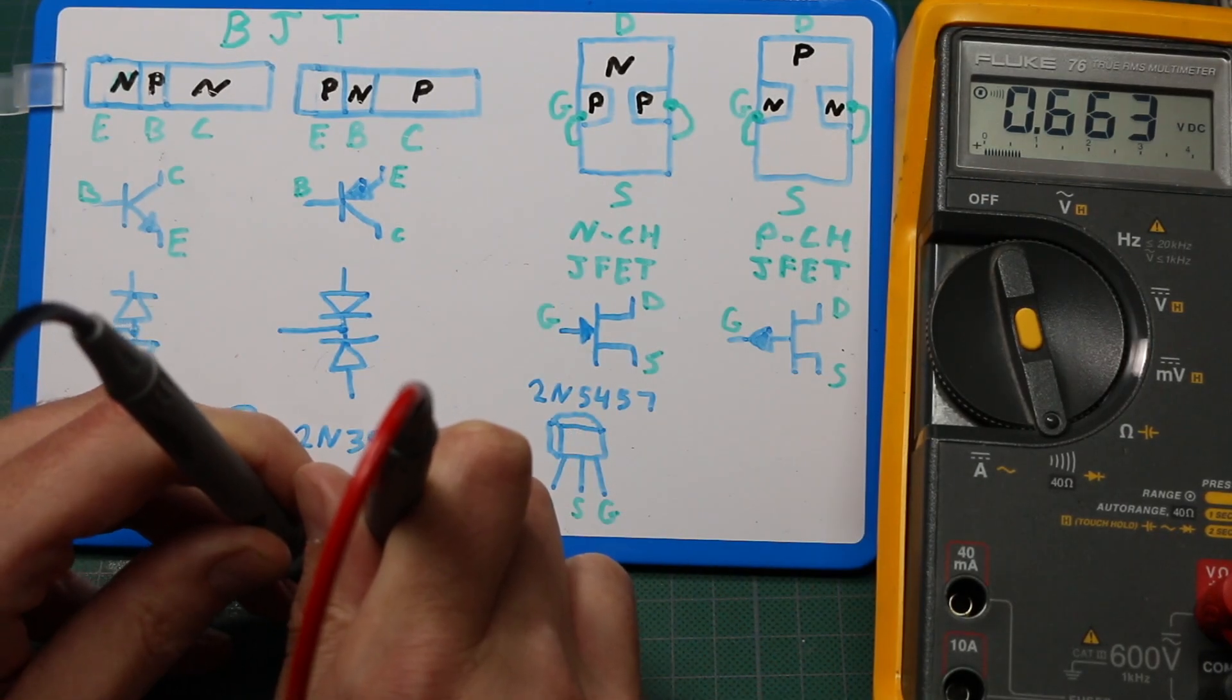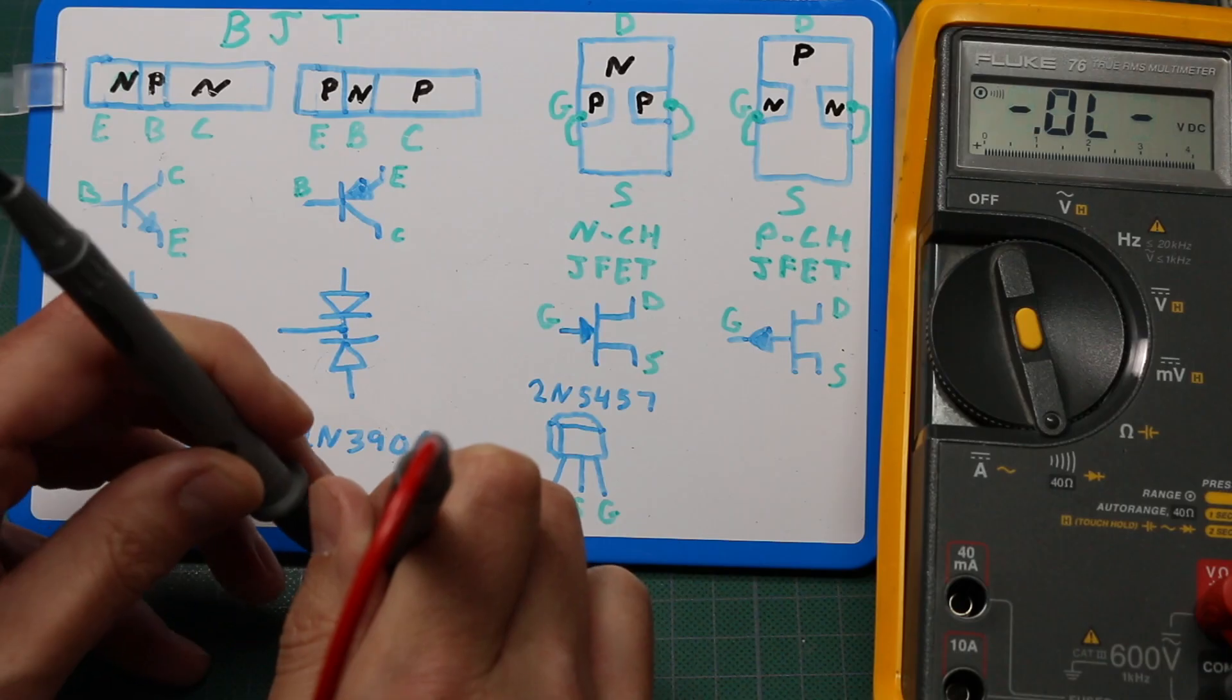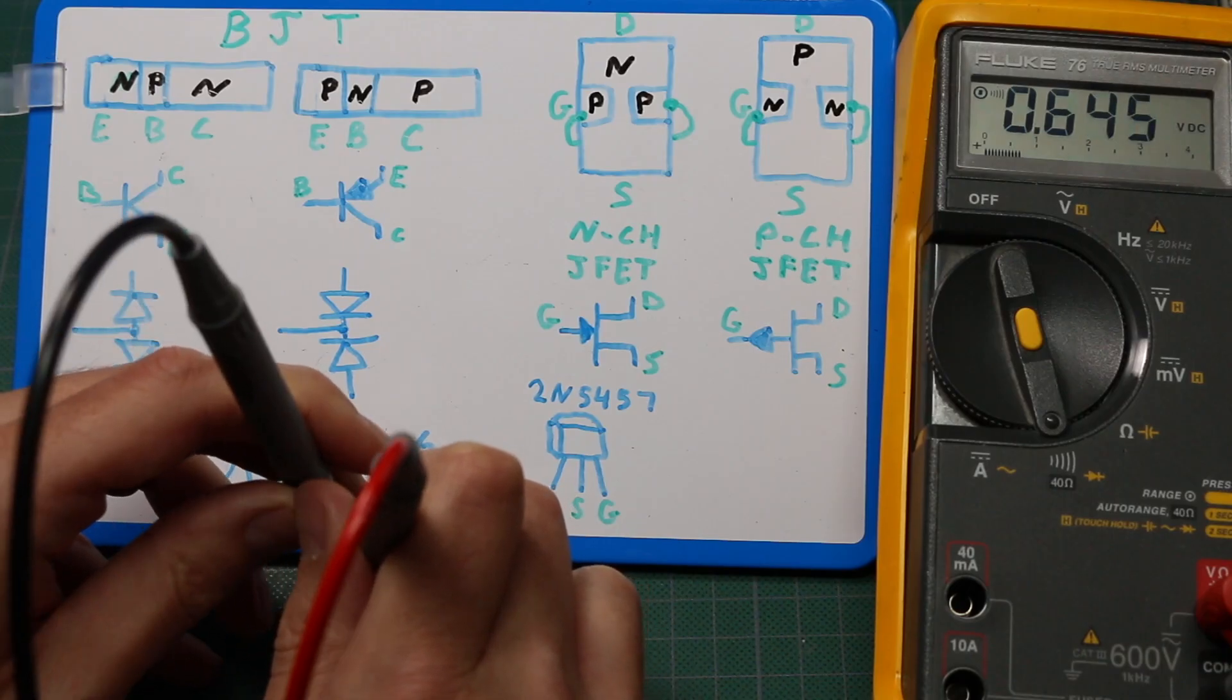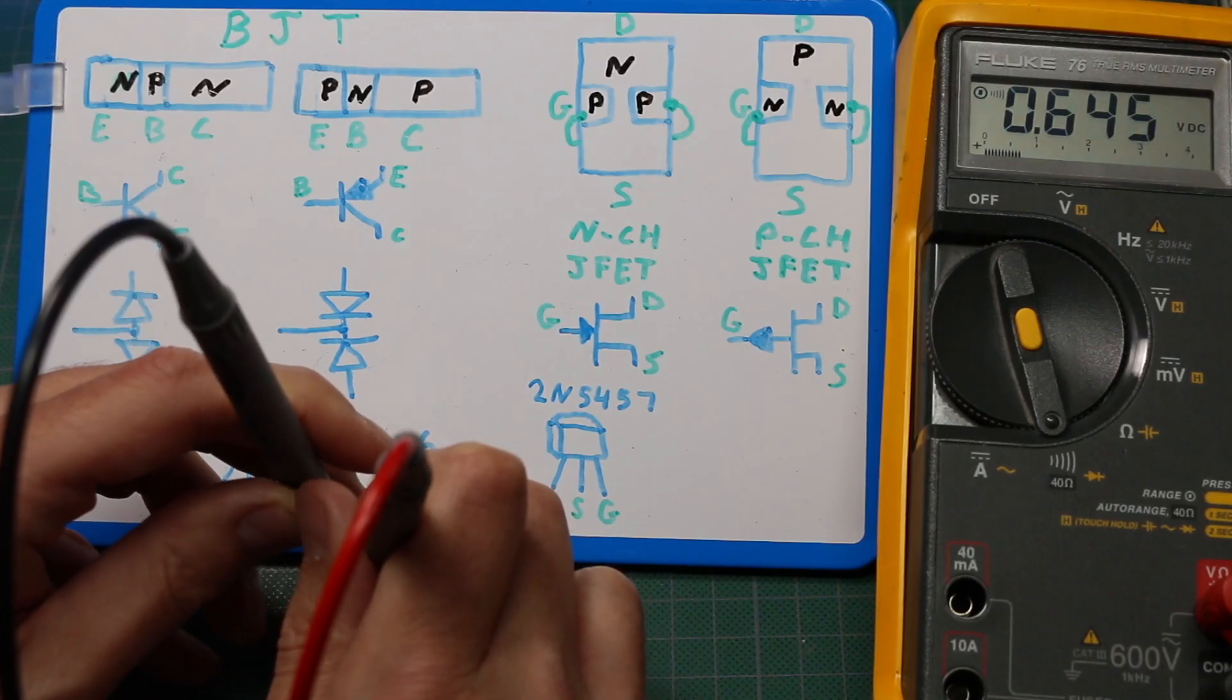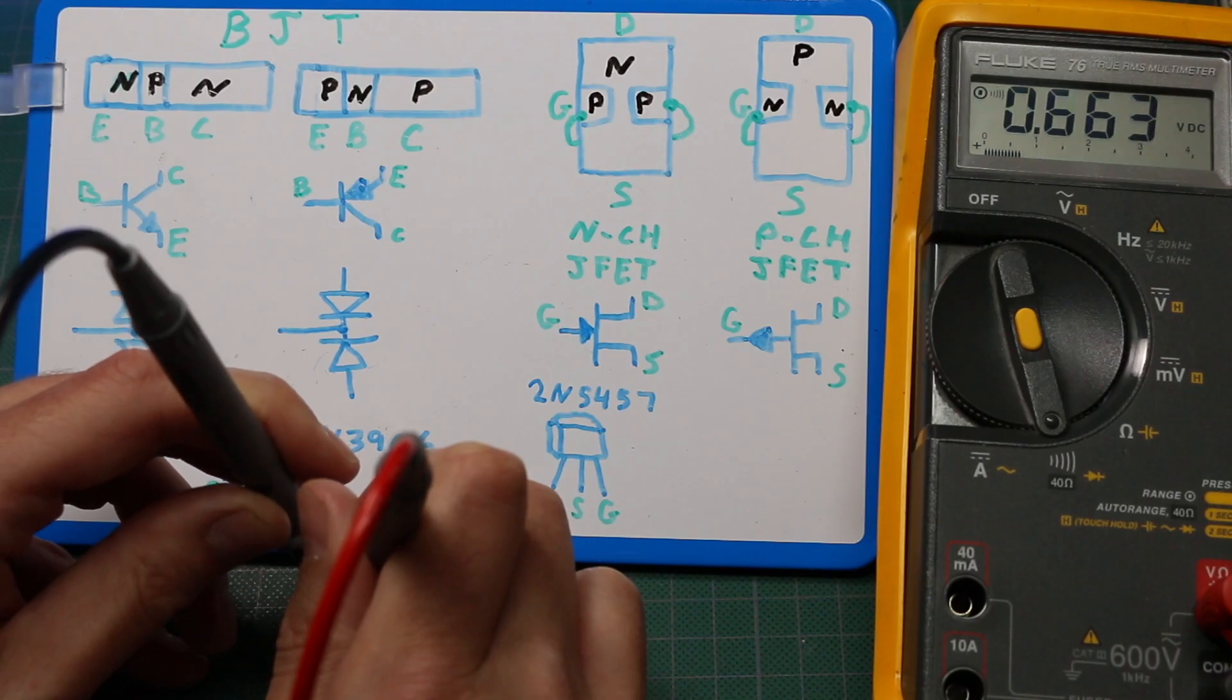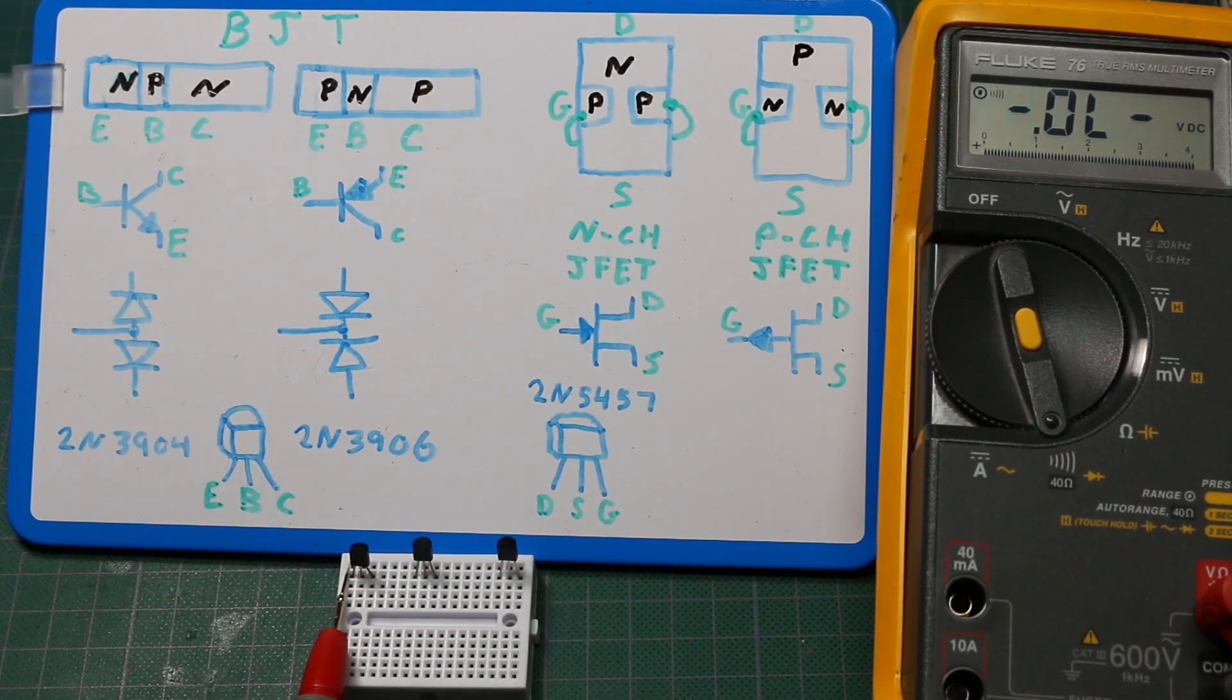So from base to one pin, 0.663. From base to the other pin, 0.645. So that's lower than this first pin. So that confirms the left pin is the emitter, the right pin is the collector, and the center is the base.